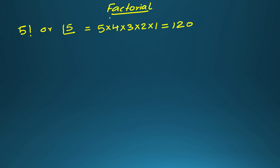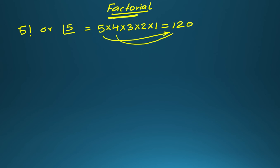The word factorial comes from the known term 'factor.' A factor is a number which can divide another number. Here, 5 can divide 120, 4 can divide 120, and the same applies for 3 and 2 as well.